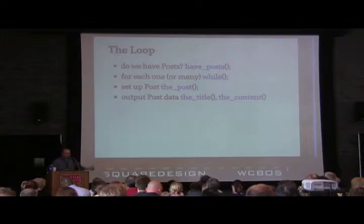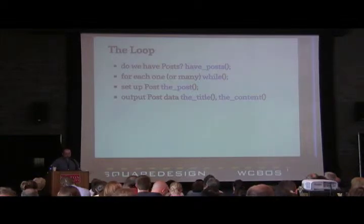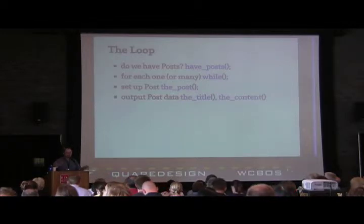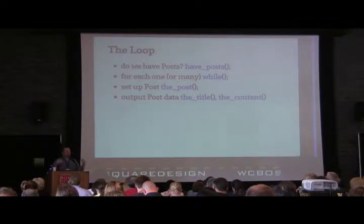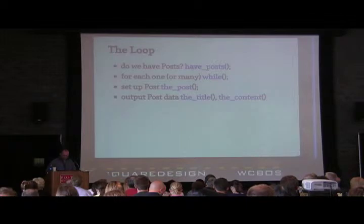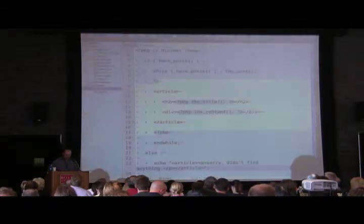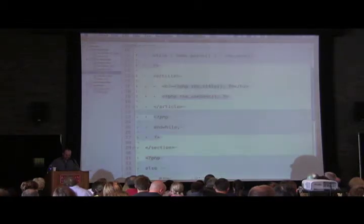This is the logic in the loop. Basically, what it asks is: do we have any posts? If we have them, for each post we set up the data to make it easier to use — that's what 'the post' does, taking database data and making things like the title and content available — and then we output it. If it didn't find any posts, we give a friendly error message.